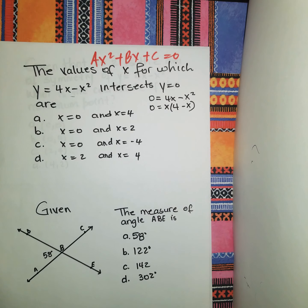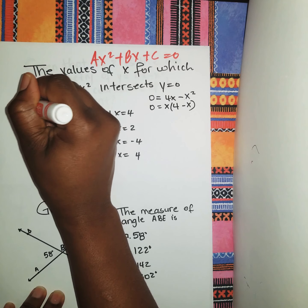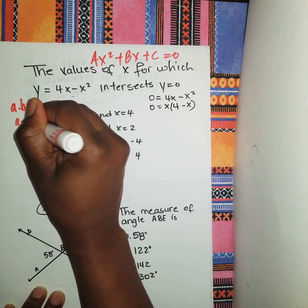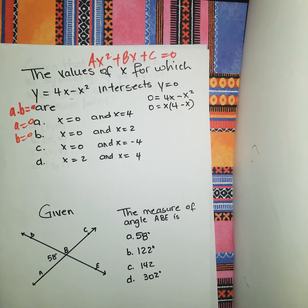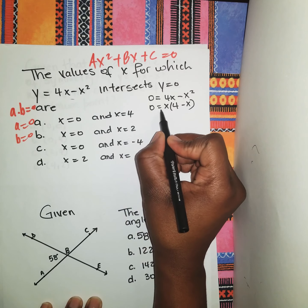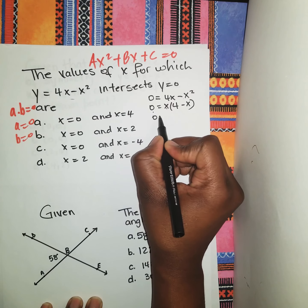So 0 = x(4 - x), all right guys. From here we're going to implement the product property that says a × b = 0, that means a = 0 and b = 0. So guys, once they're multiplying, you're going to equate them to 0.